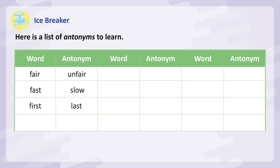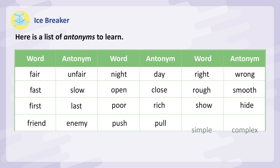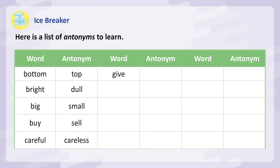Fast – slow. First – last. Friend – enemy. Night – day. Open – close. Poor – rich. Push – pull. Right – wrong. Rough – smooth. Show – hide. Simple – complex. Bottom – top. Bright – dull. Big – small. Buy – sell. Careful – careless.